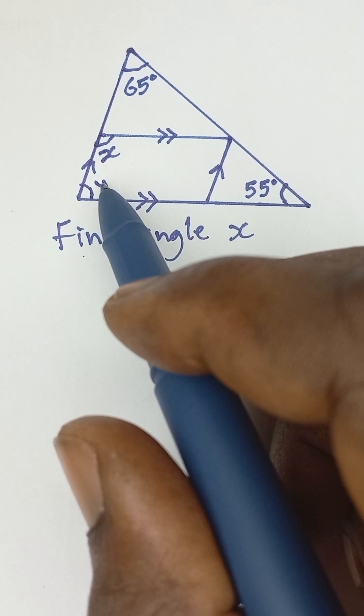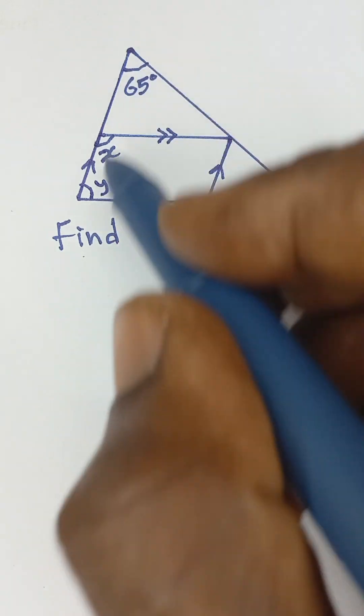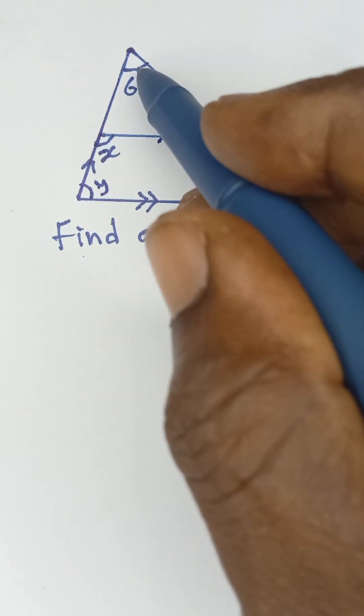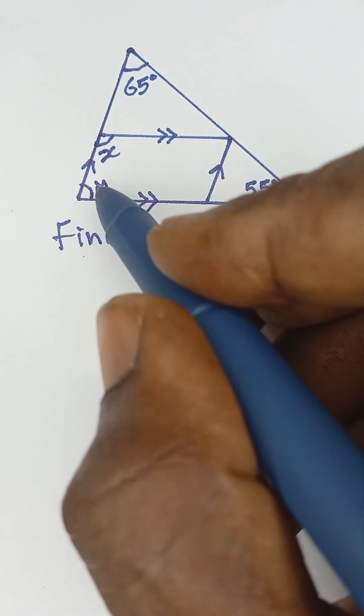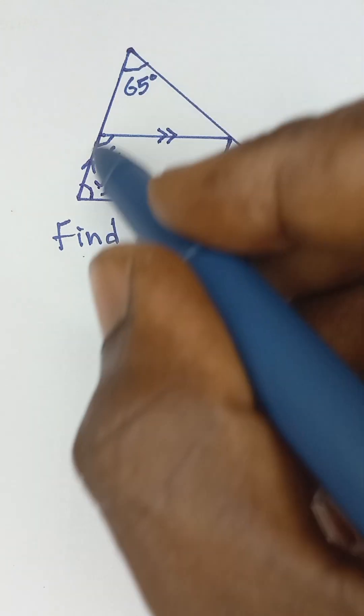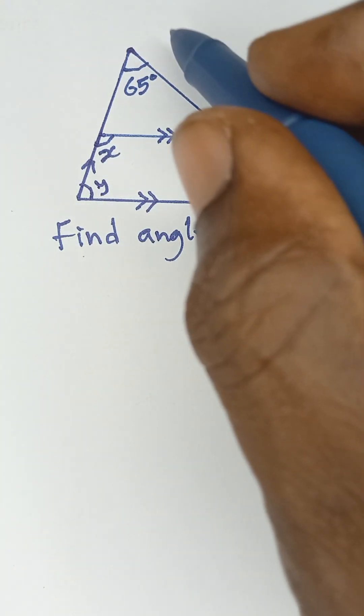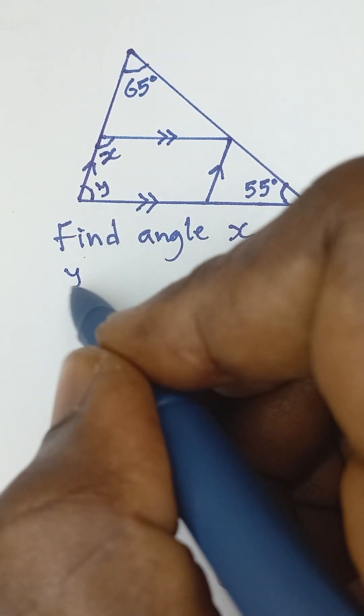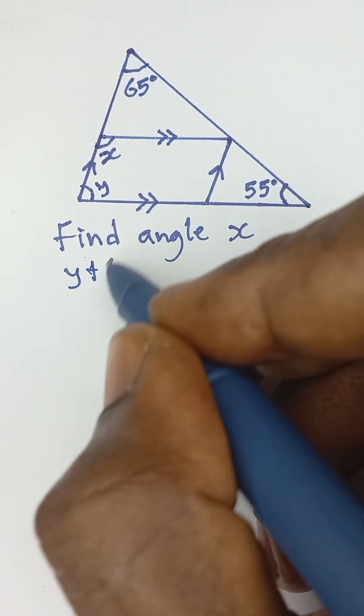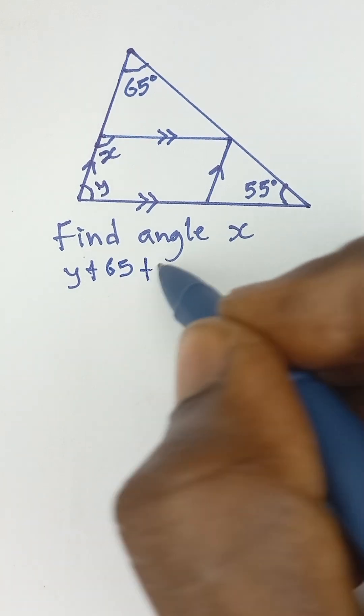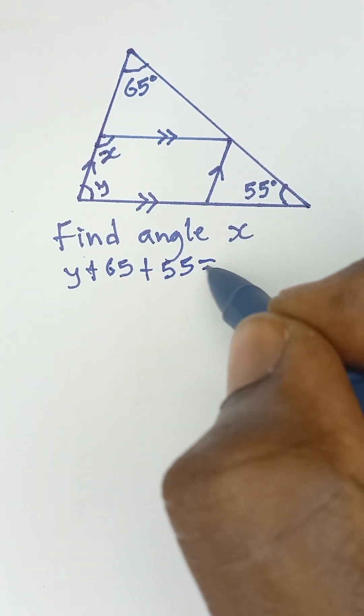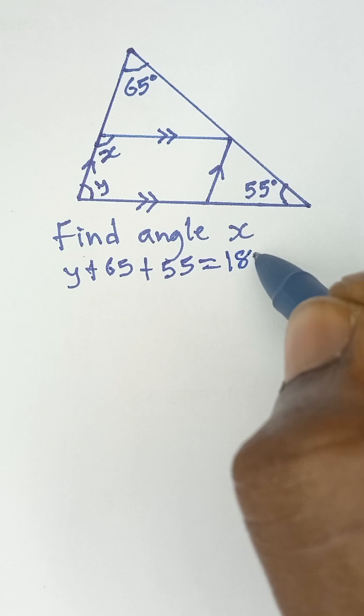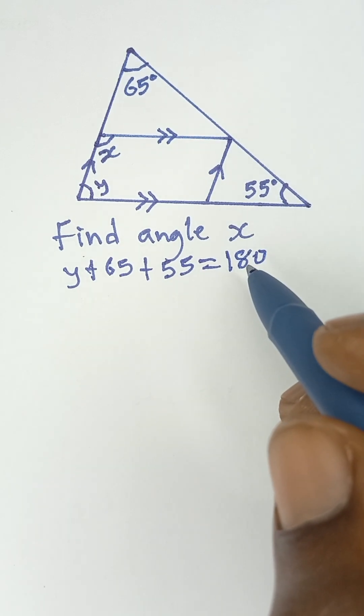If this angle is y, then you are given that sum of angles in a triangle: 65 plus 55 plus angle y. That is the angles in this triangle. Sum of angles in a triangle is equal to 180, so angle y plus 65 plus 55 should sum up to 180.